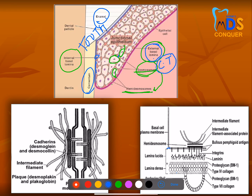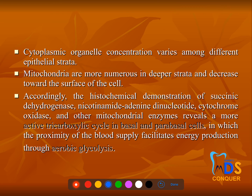The basement membrane has two layers: lamina lucida and lamina densa. The hemidesmosomes are attached to the lamina lucida layer of the basement membrane. This image covers many important concepts — study it carefully.